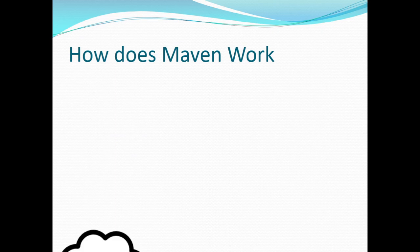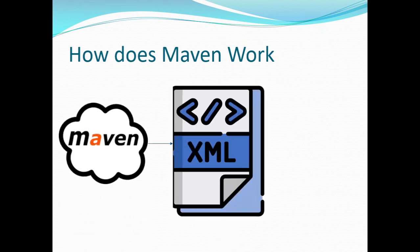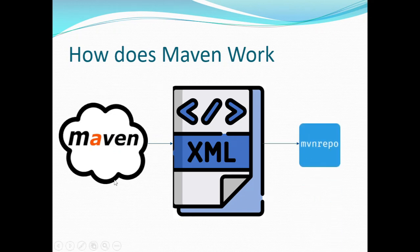Whenever you create a Maven project you get the pom.xml file by default. Maven reads this file and downloads all the dependencies defined in it from the central repository to the local repository. You install Maven on your machine, Maven reads the pom.xml, downloads the dependencies from the central Maven repository, and stores them in your local repository.